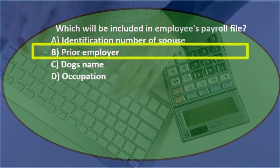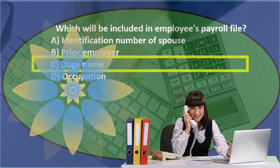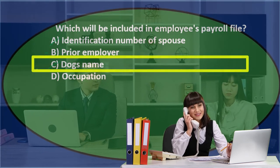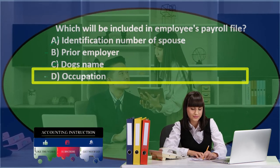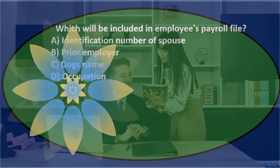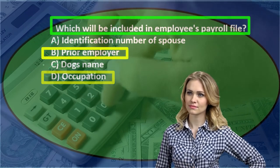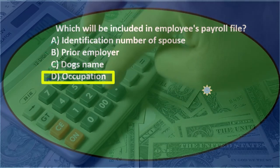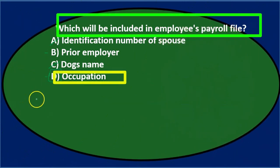B. Prior employer — we'll keep that as a possibility. C. Dog's name is probably not in most payroll files. D. Occupation — that typically will be in the payroll file along with name, social security number, and address. Of B and D remaining, occupation is the most correct answer. Which will be included in the employee's payroll file? D, occupation.